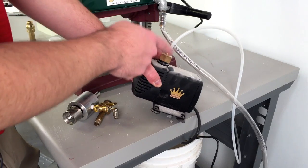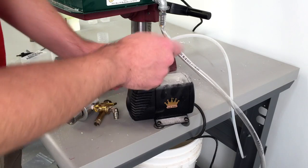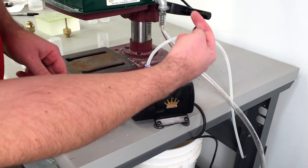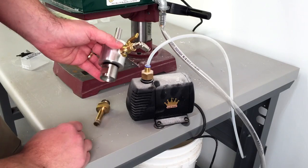Our submersible pump here is going to go into a bucket underneath our table that we have full of water. This tubing will come back up through our table and connect to our drill head assembly in our drill press, and I'll show you how that works.